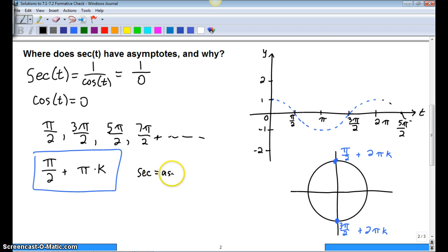Secant equals asymptote. This is very shorthanded. Secant equals asymptote when cosine is 0. Because secant then equals 1 over 0, which is undefined.